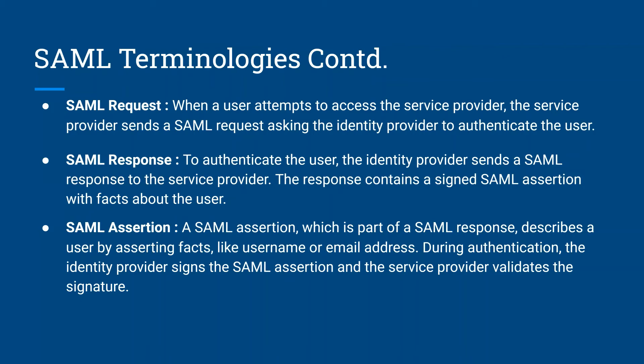The next one is SAML assertion. A SAML assertion, which is a part of the SAML response, describes a user by asserting facts like username or email address. During authentication, the identity provider signs the SAML assertion and the service provider validates the signature. So a SAML assertion is basically an XML file which contains user information like username or email address, and that file is digitally signed and then validated by the service provider.